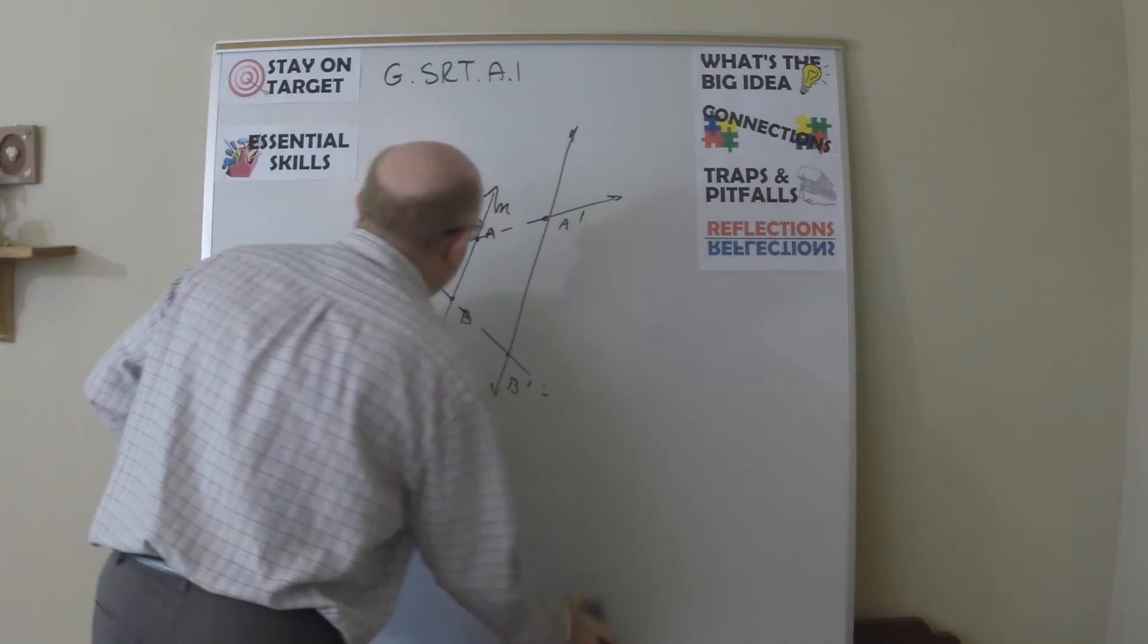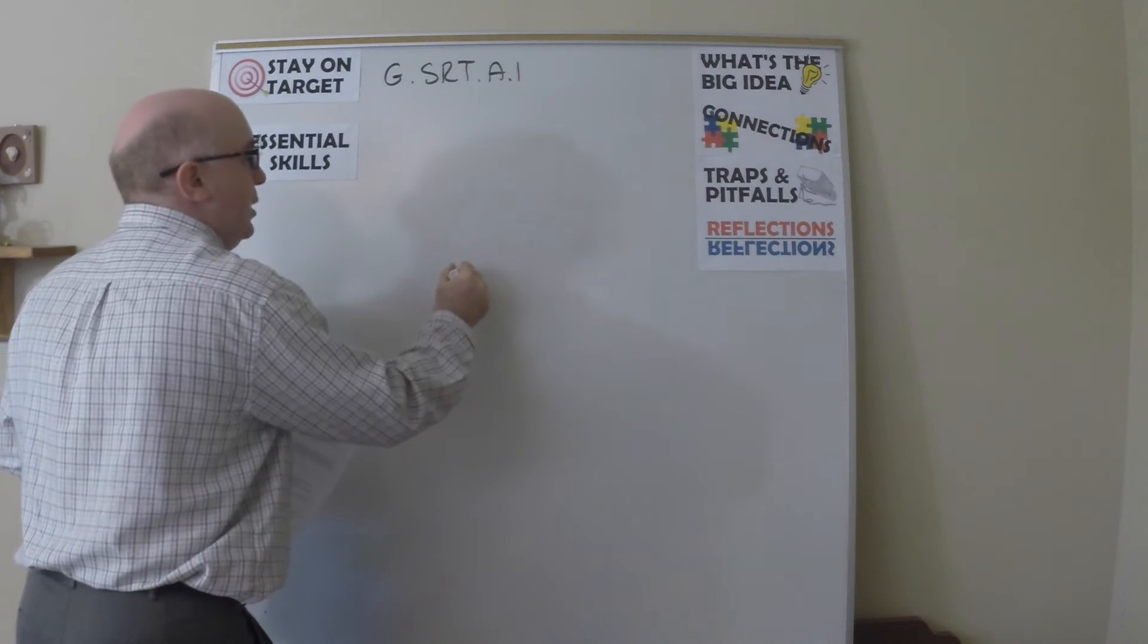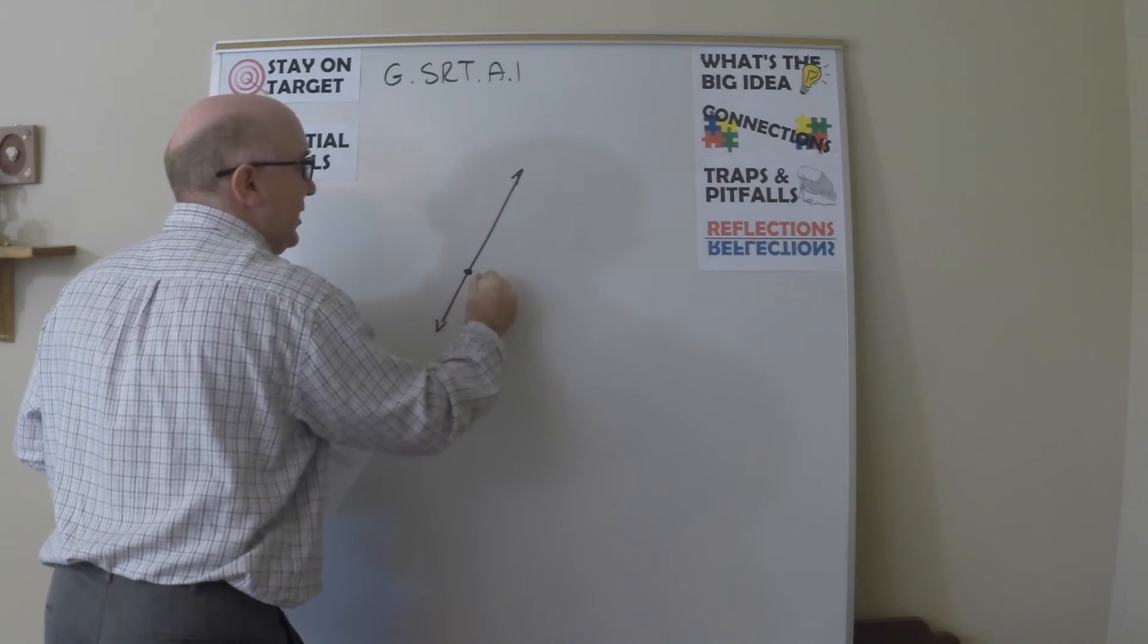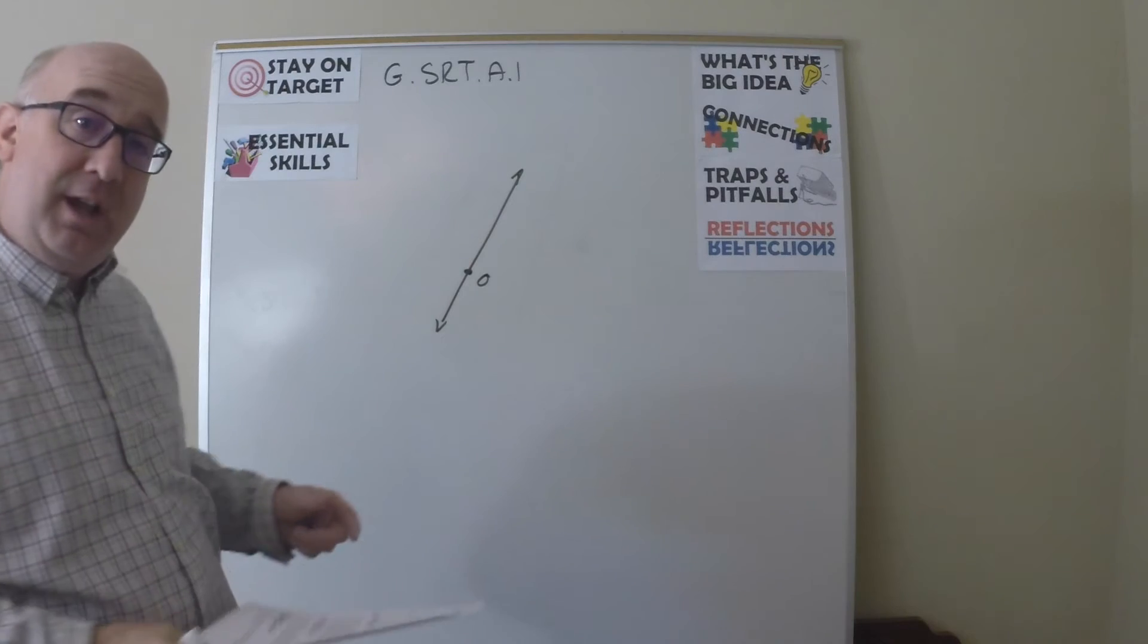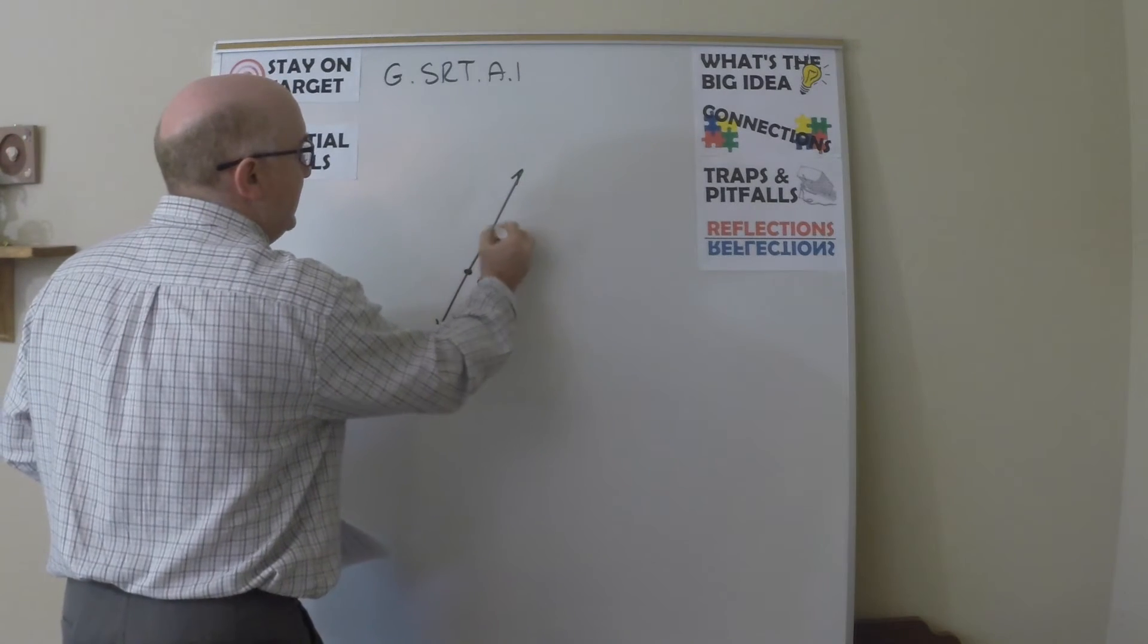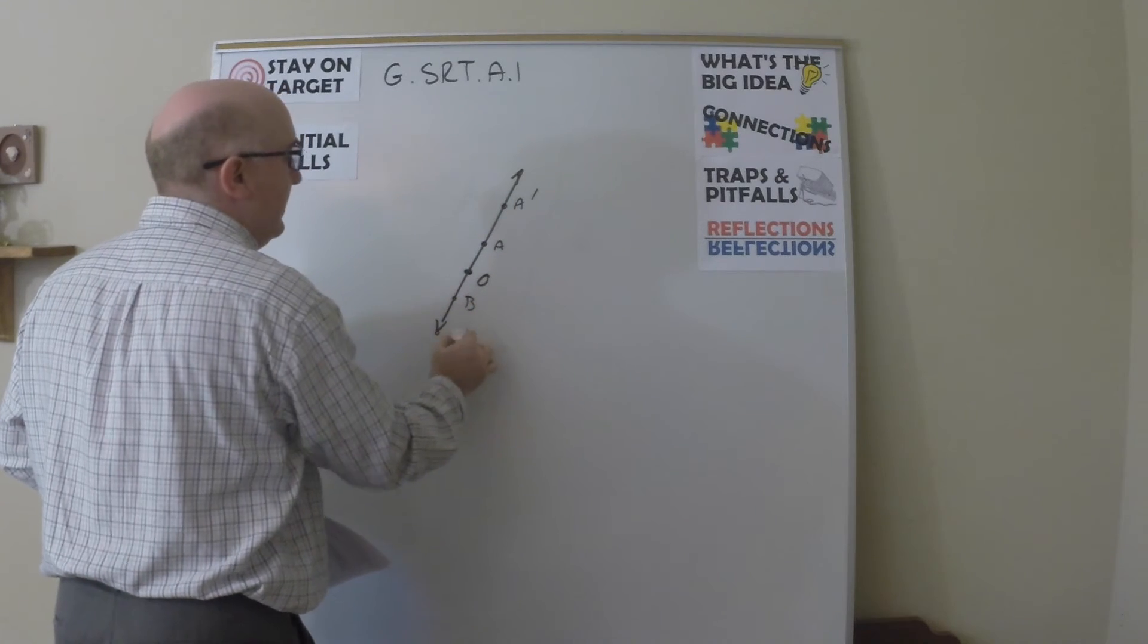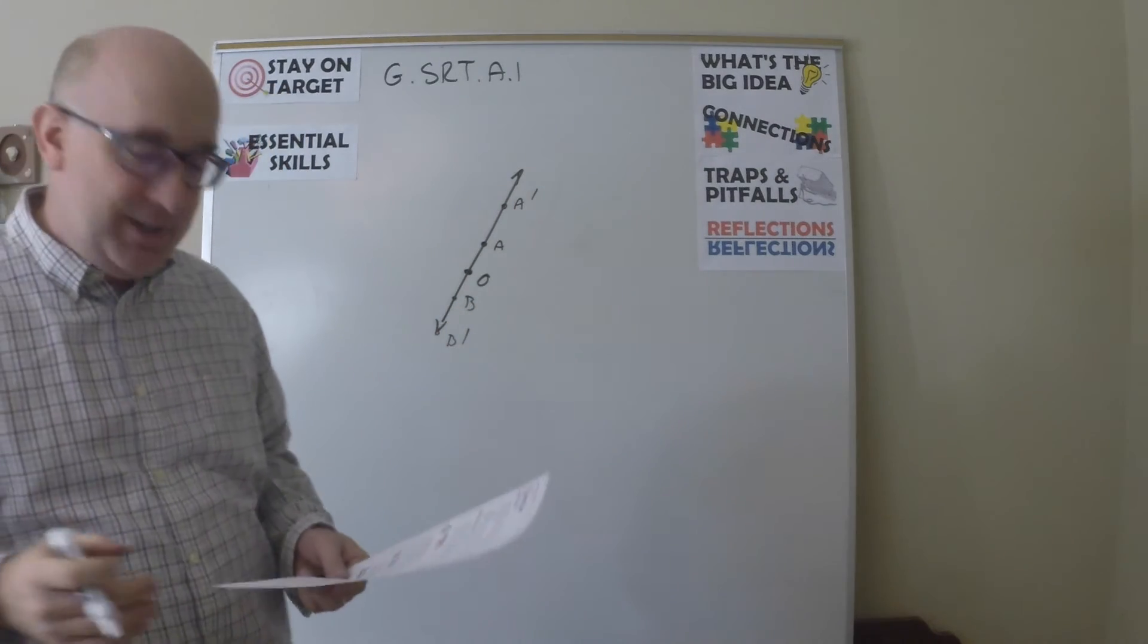Another tricky idea, same concept, is what happens if you dilate and the center of dilation is here and it goes through your line? Well the idea of course is A would go to A prime, B would go to B prime, and so on, and it just produces the same line.